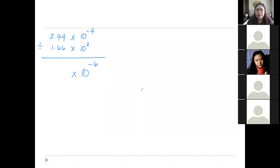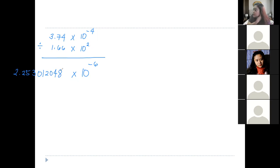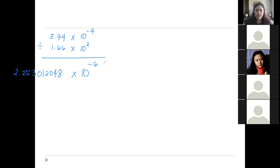And the next step: divide N1 by N2. So 3.74 divided by 1.66 — this is a bit long. Since we haven't discussed significant figures yet, you have the option whether to copy everything or to round off. You can copy 2.253012048. This is because we have not yet discussed significant figures — after this we'll have that topic. For now, let's copy everything. So this is 2.253012048 times 10 raised to the power of negative 6.